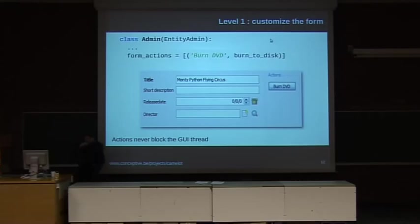Now I promised that the framework was easy to customize. So first thing you can do is you can add actions to forms. This is very easy to do. You just add some functions to the form actions attribute of the admin class. So here we have the burn to disk function, it just takes a single argument, the movie, and it burns it to the disk. So you get a button on the form and when the user presses that button, the function gets called.